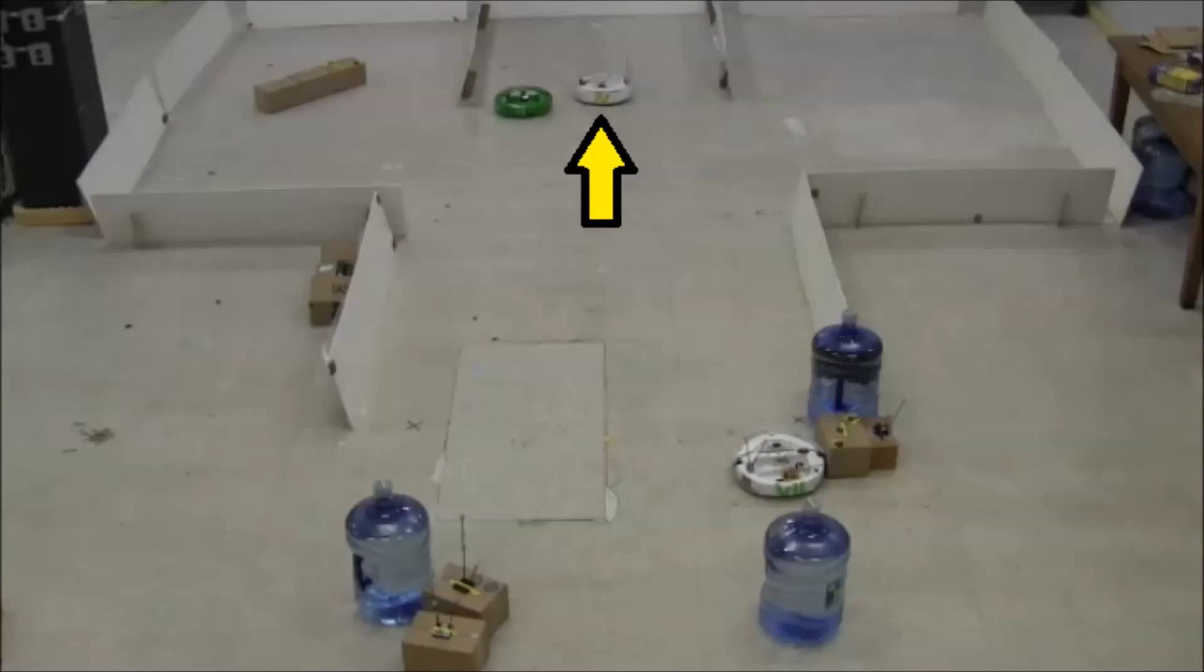The white robot sends a signal to the green robot, which is interpreted as a request for help in depot 1.